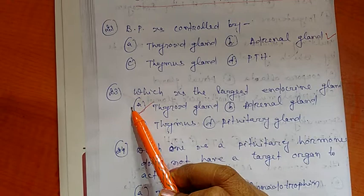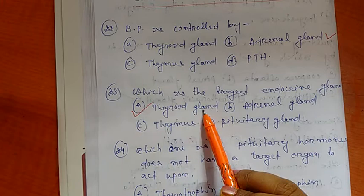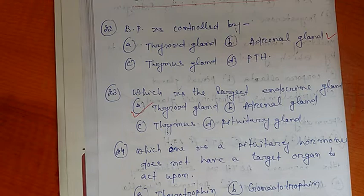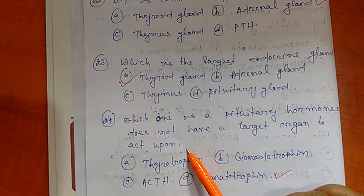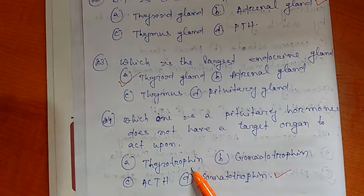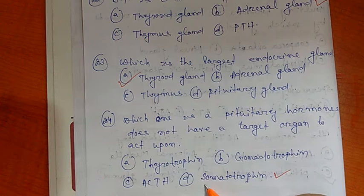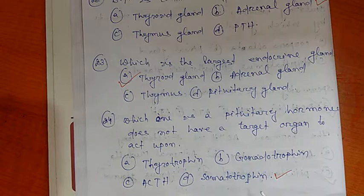Question 24: Which one is a pituitary hormone that does not have a target organ to act upon? Options are A) Thyrotrophin, B) Gonadotrophin, C) ACTH, and D) Somatotrophin. So the right option is somatotrophin, which does not have a target organ to act upon.